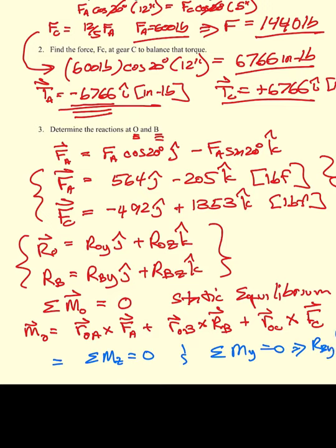Doing that, we find that R_B equals 315 pound-force j minus 1615 pound-force k. If you thought you weren't going to have to do statics, you thought wrong — statics and free body diagrams are how you figure out the loads your system must carry. Once we have the reaction at B, we take sum of forces equal to zero to find the reaction at O, which is minus 387 j plus 467 k, in pound-force.